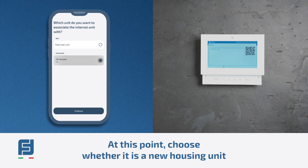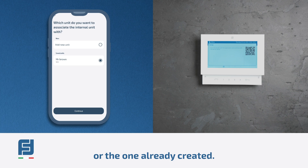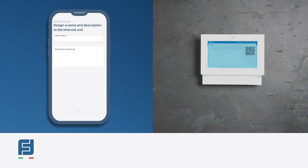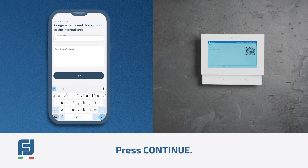At this point, choose whether it's a new housing unit or the one already created. In this case, select the one already created for Mr. Brown, then press continue.